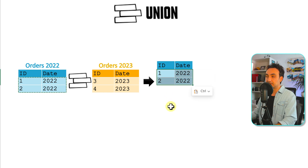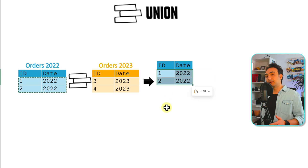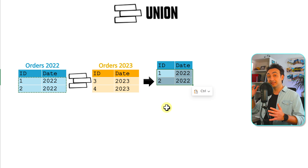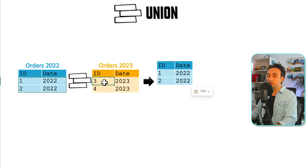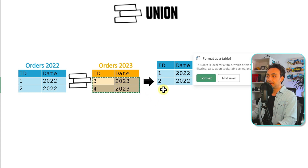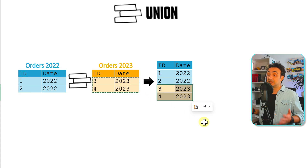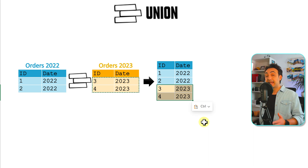After taking the fields from the left table, it takes all the rows from the left side and puts them in the results. From the right table we don't take the fields again since we already have them. It takes only the rows and appends them at the end. It's very simple — it just needs exactly the same number of columns and the same data types.